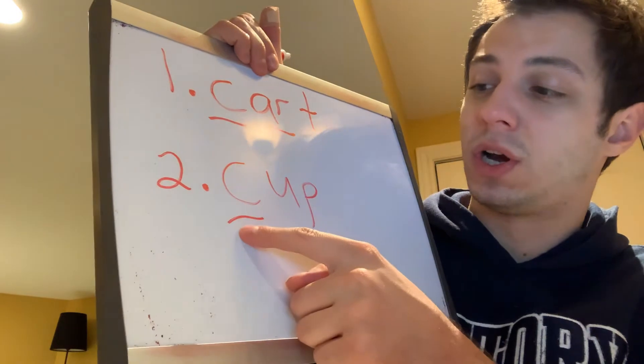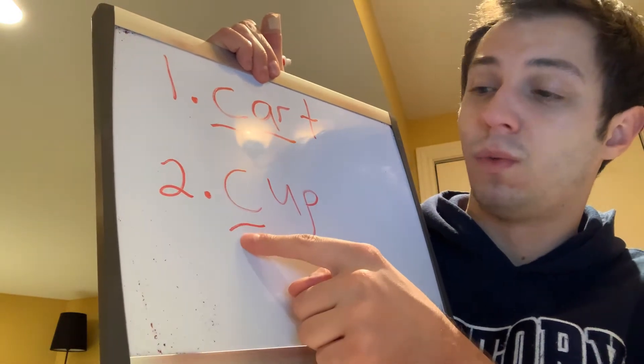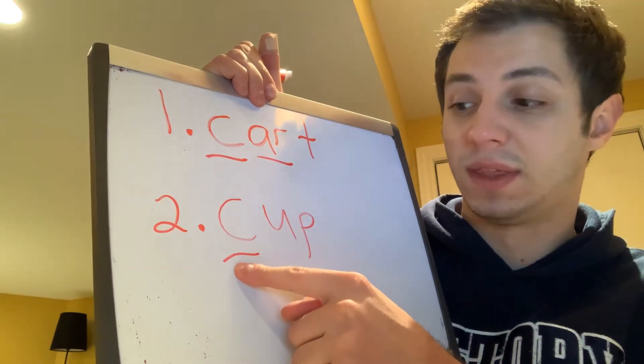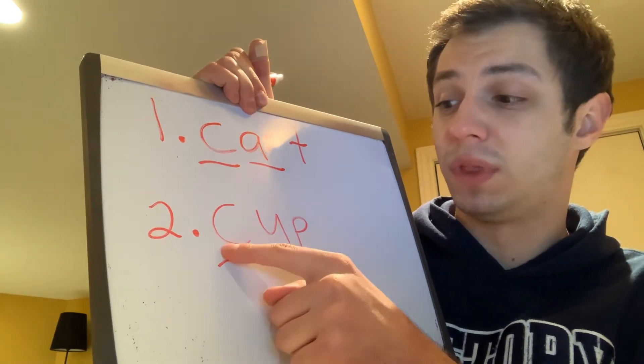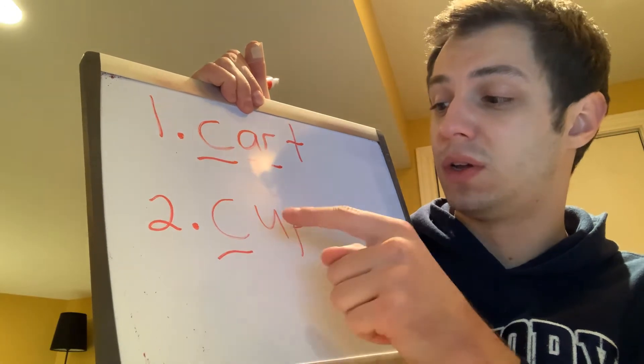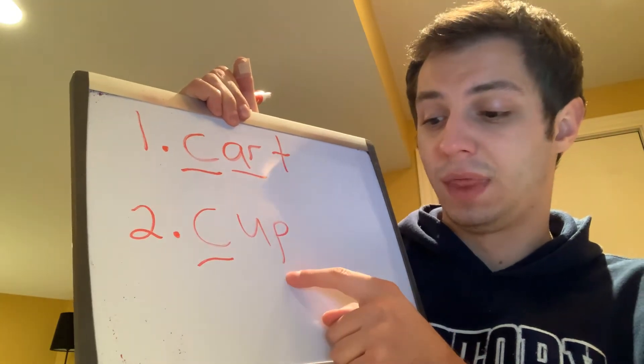Our next word is the word 'cup.' Get ready? Write cup. Let's spell cup: C-U-P. So the word cup — once again it has the K sound at the beginning, but it's spelled with the letter C. Then we have the U and the P.